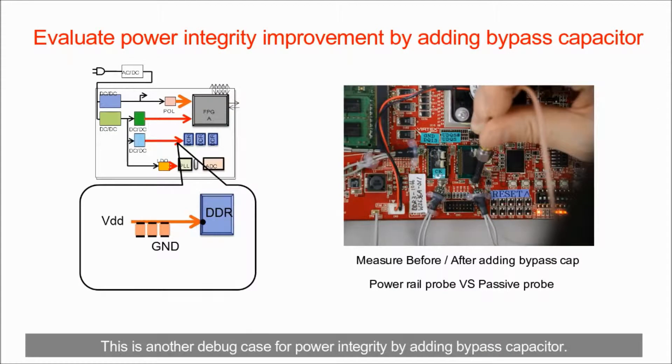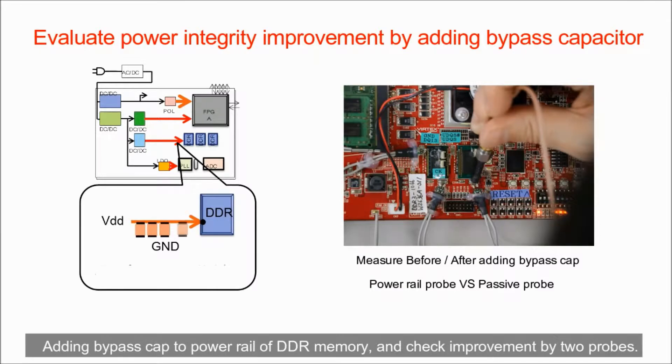This is another debug case for power integrity by adding bypass capacitor. Adding bypass capacitor to power rail of DDR memory and check improvement by two probes.